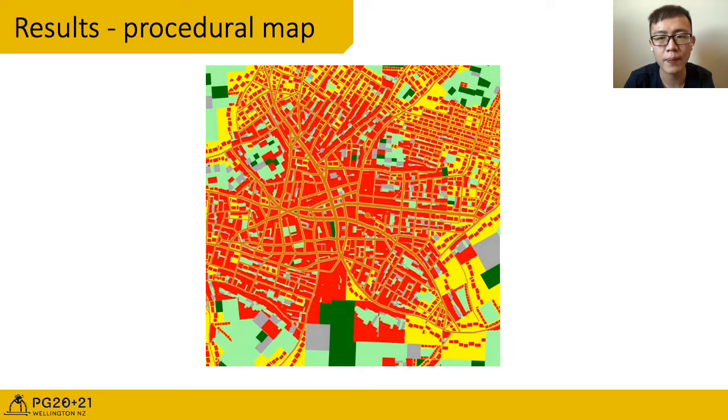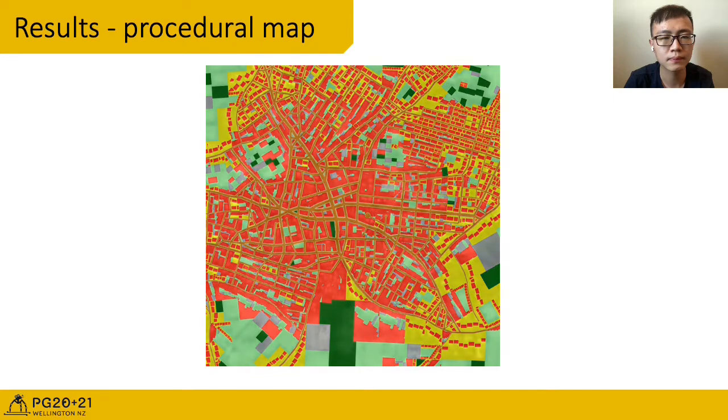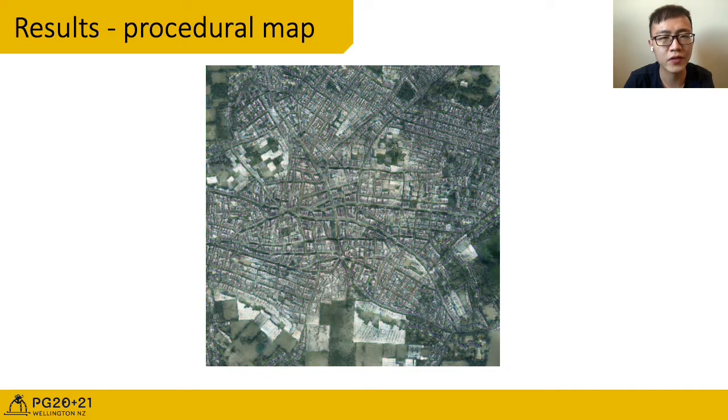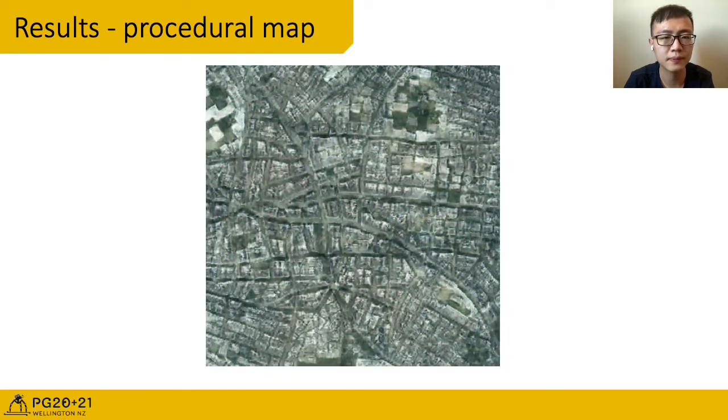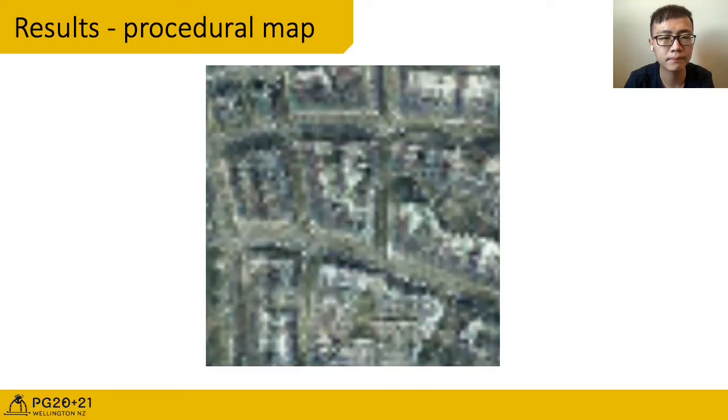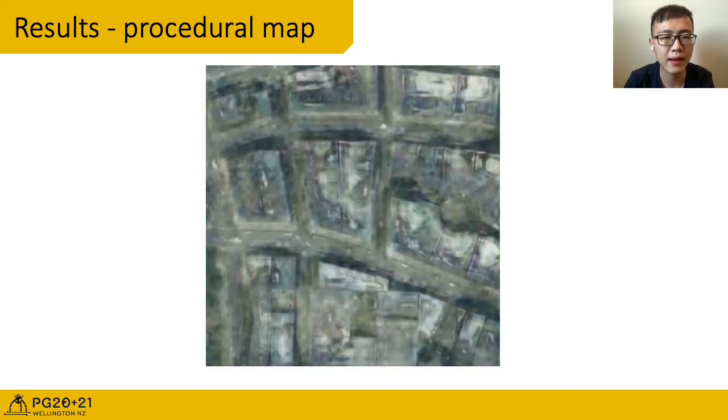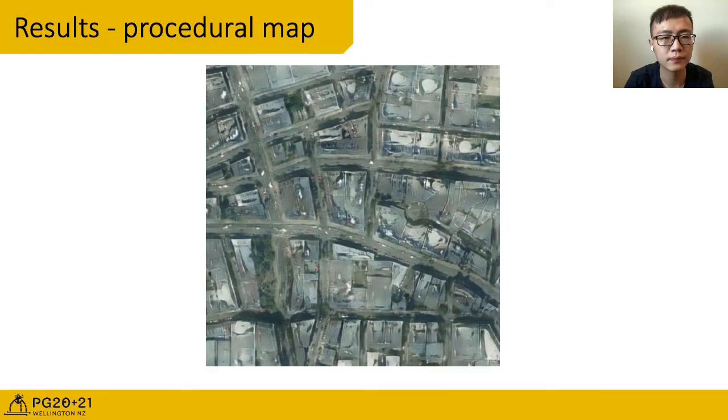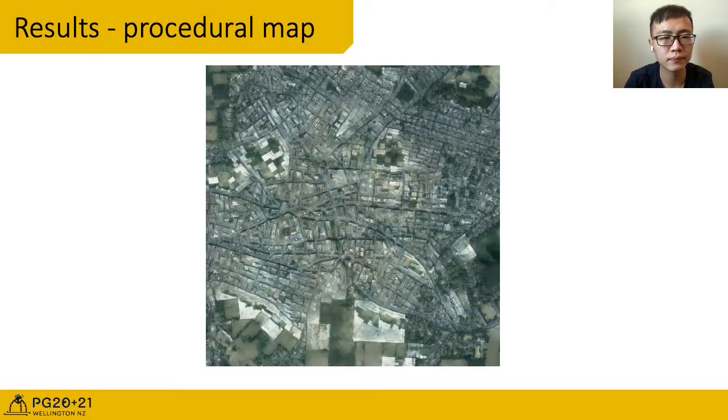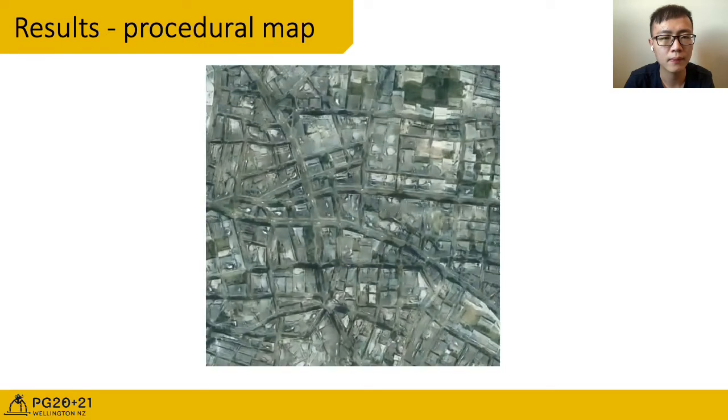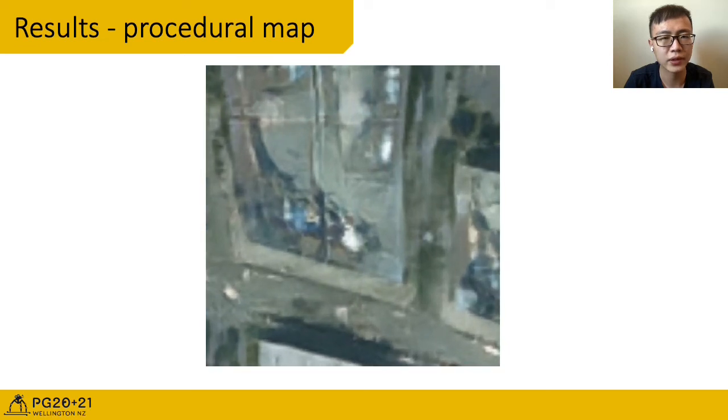This one shows our pipeline, using a procedural map image made by procedural modeling as our input. We generate scale level 1's result first. And scale 2. And scale 3.